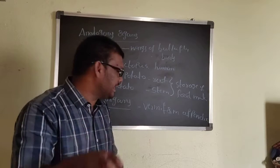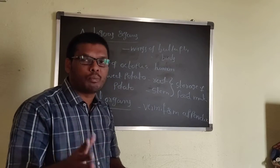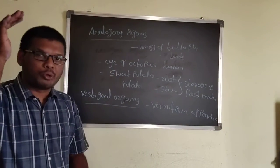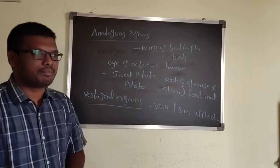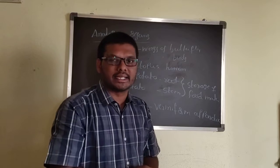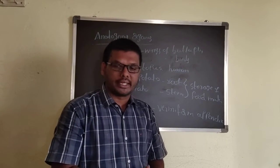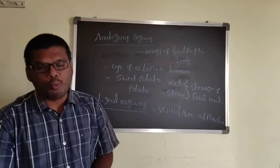Now, the appendix is present but it is not able to produce cellulose. Why could it produce cellulose enzyme at that time? In our previous ancestors - Ramapithecus, Australopithecus, Homo habilis, Homo erectus.